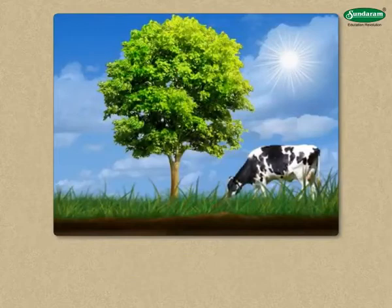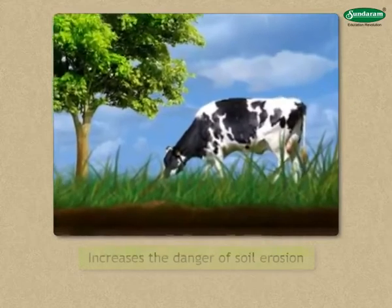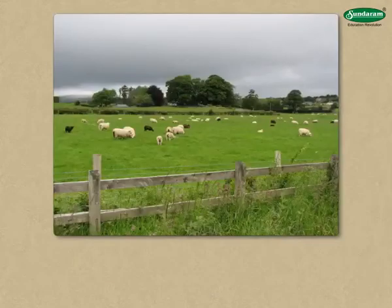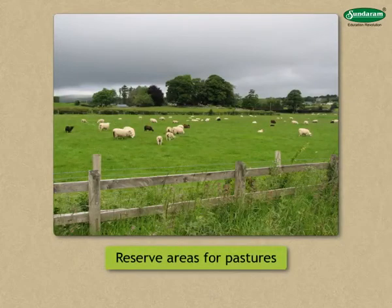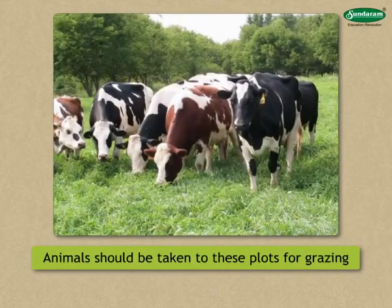But the grass attracts grazing animals. The movement of these stray animals increases the danger of soil erosion. They also eat up the grass, leaving the soil uncovered. To prevent such erosion, it is possible to reserve areas for pastures and ensure that there is grass in those areas all the time. All animals in the surrounding areas should be taken to these plots for grazing and should not be allowed to wander.